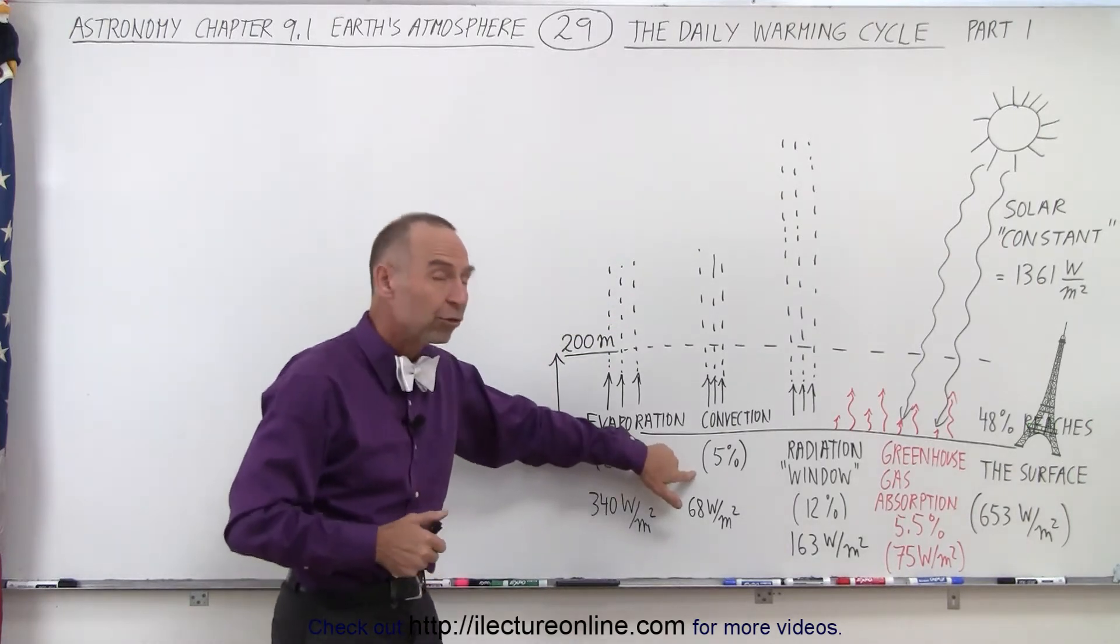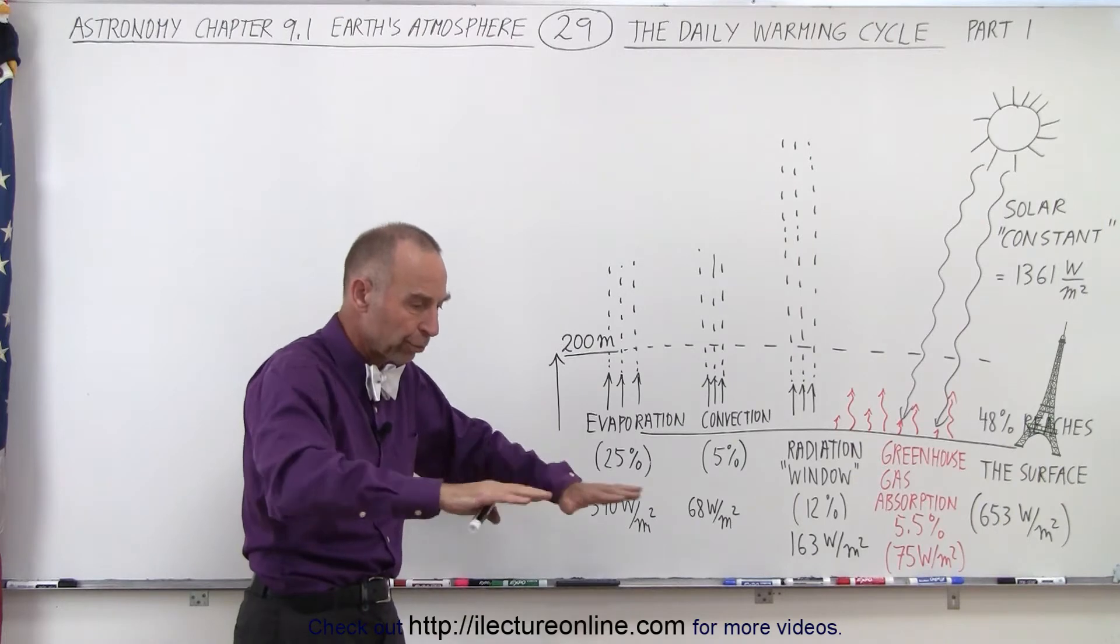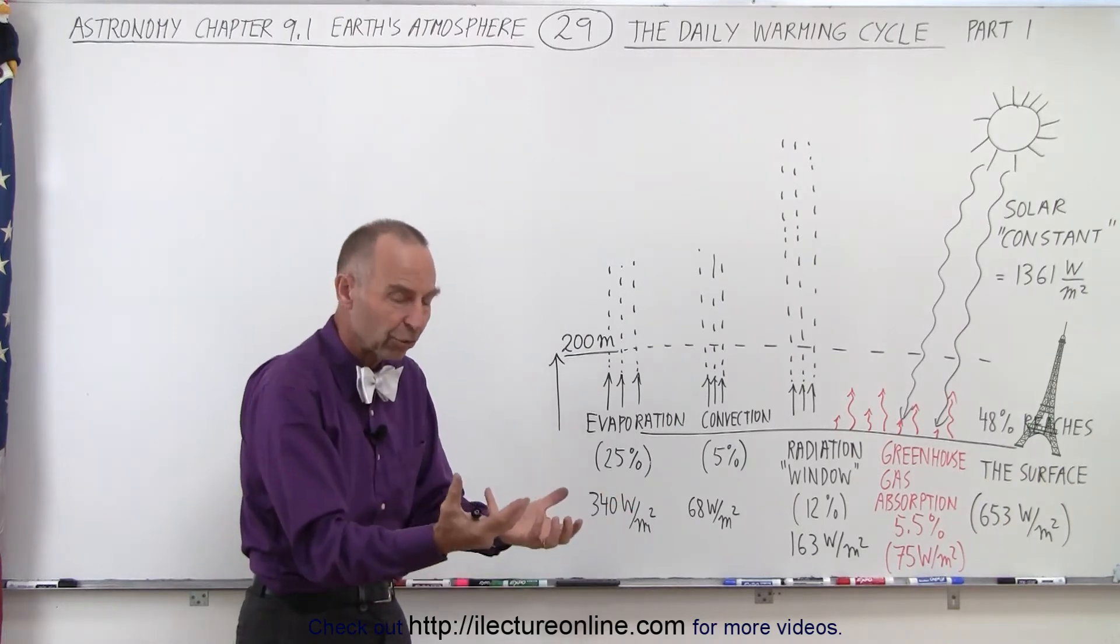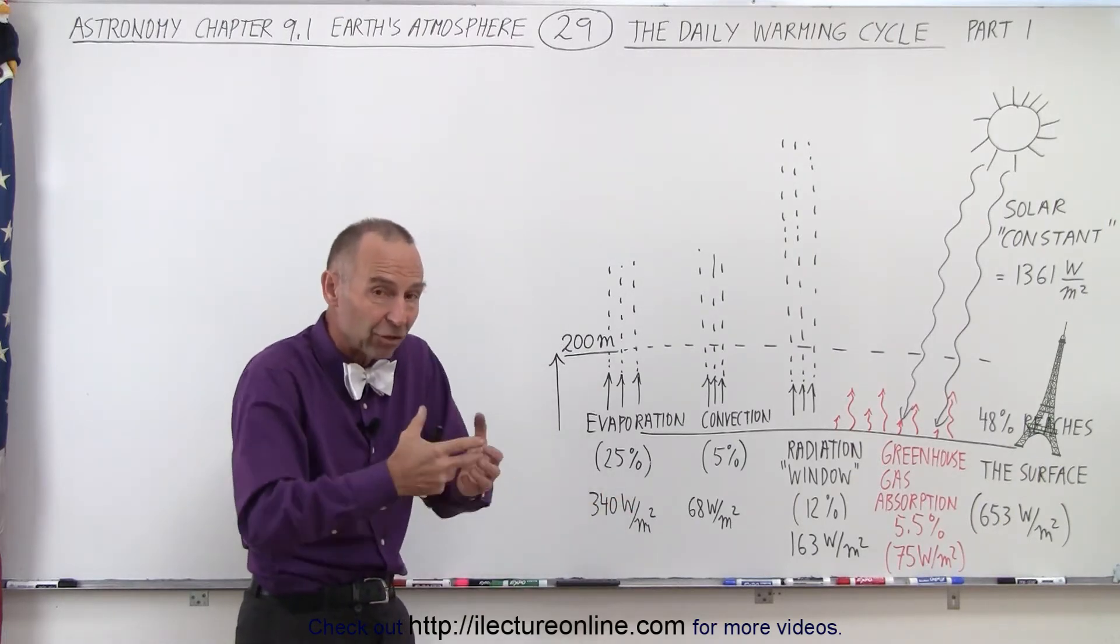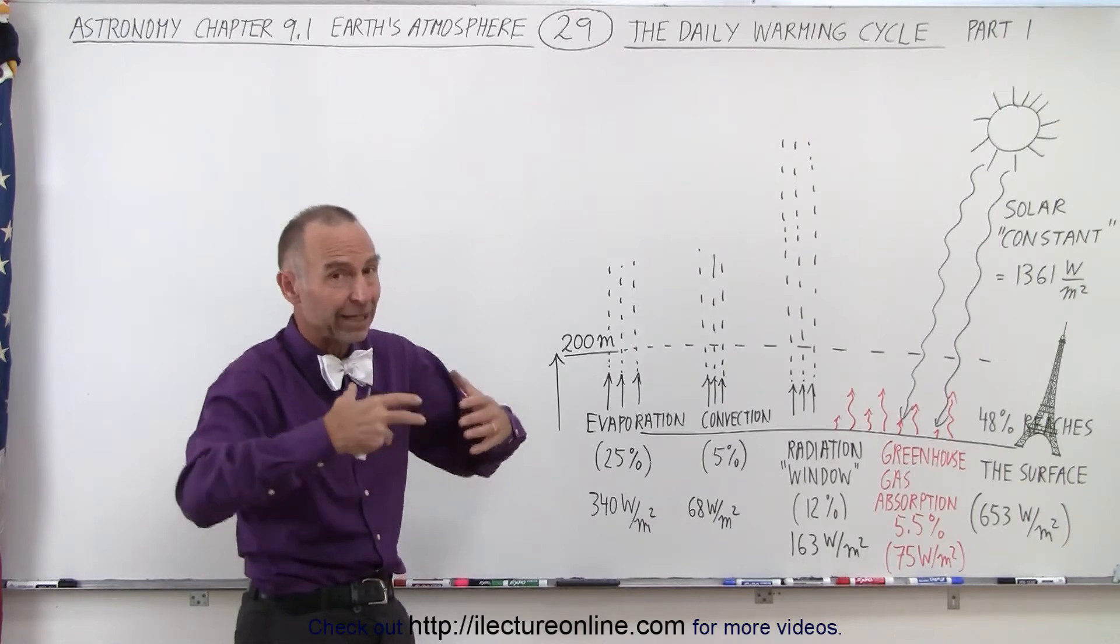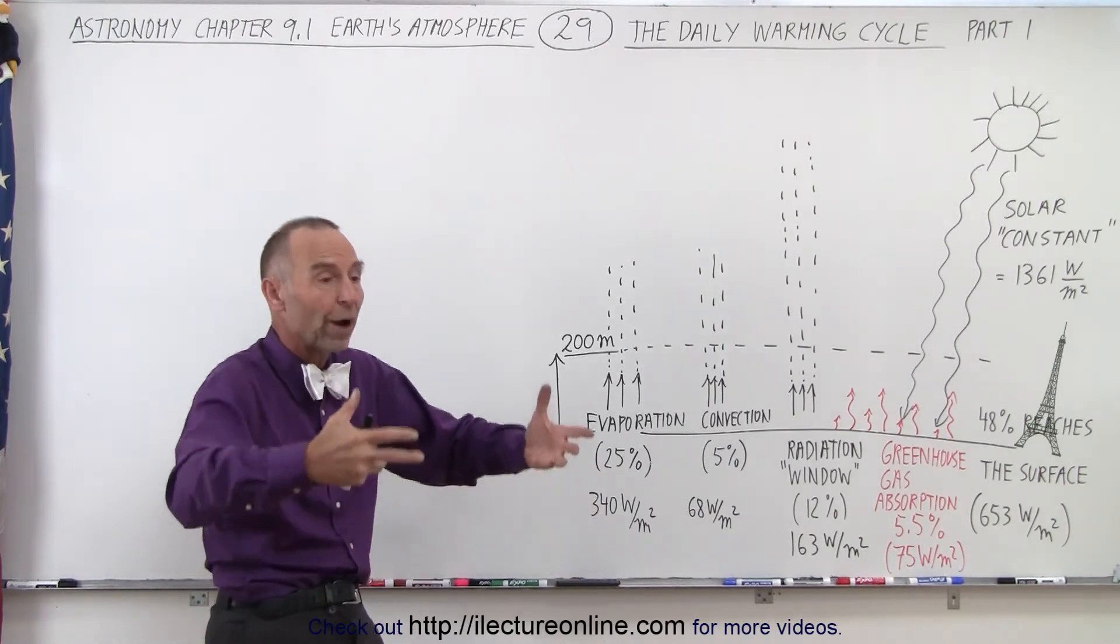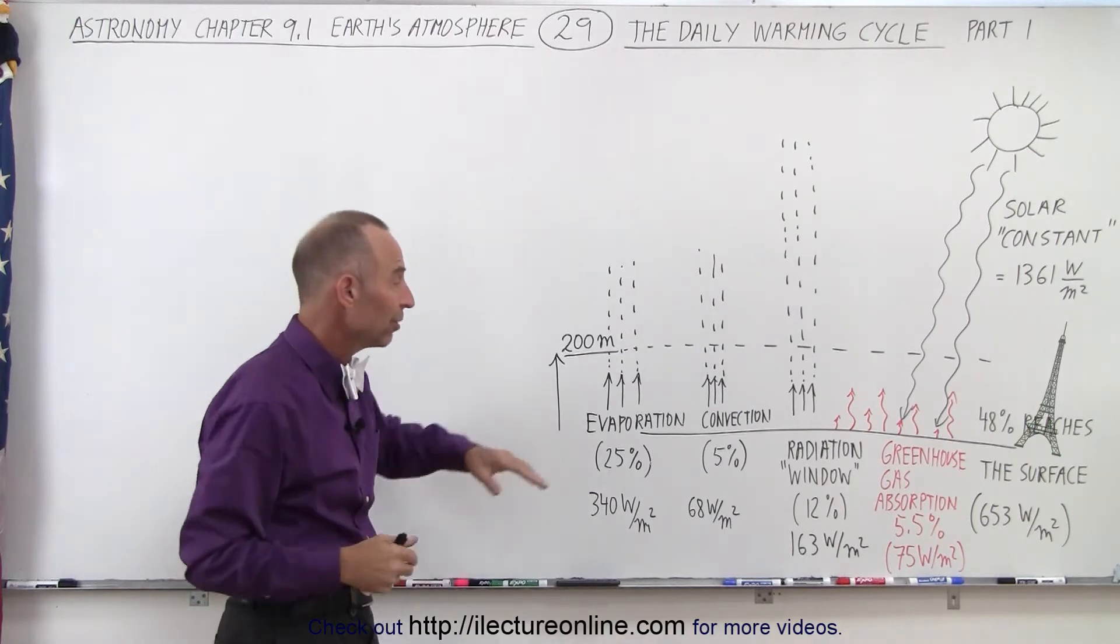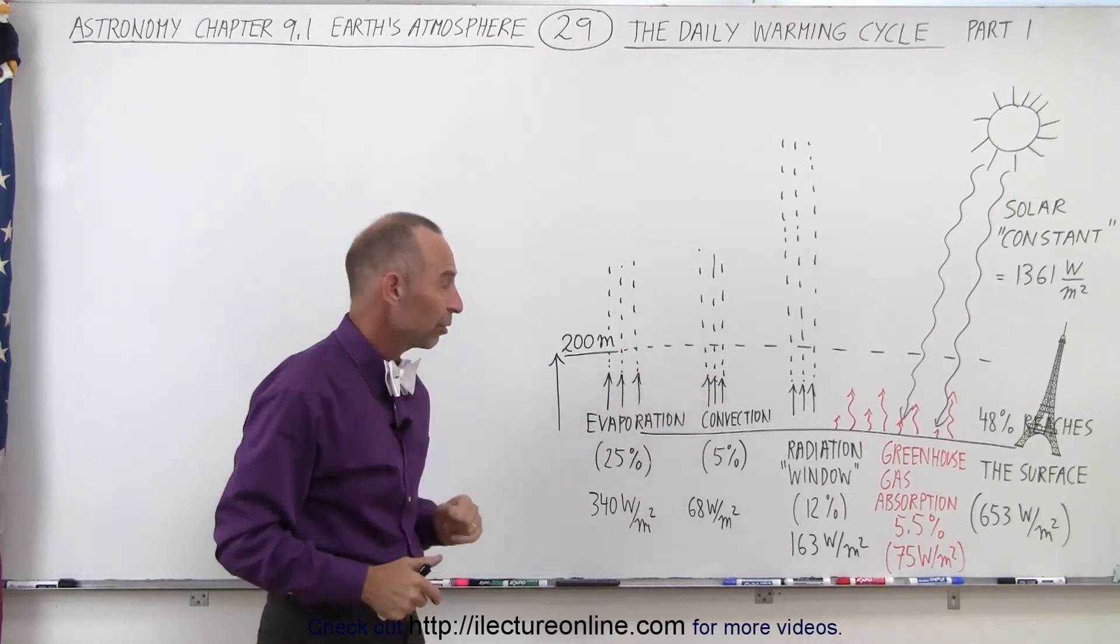Another 5% is through convection. As the air molecules hit the warm surface of the Earth, they pick up the energy from the surface. As they pick up the energy, they heat up. As they heat up, they expand, and the expanding air then rises up because it's less dense and rises up into the atmosphere, again taking heat away from the surface.